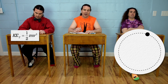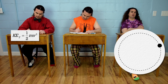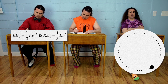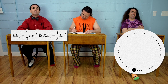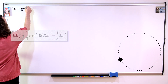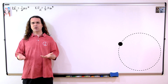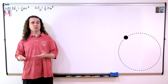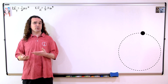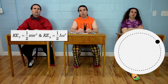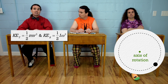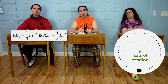Translational kinetic energy equals one-half mass times the velocity squared, and rotational kinetic energy equals one-half rotational inertia times angular velocity squared. So which one of these two equations do we use for the kinetic energy of a point particle moving in a circle? Well, the point particle is clearly revolving about an axis of rotation, so we should use the rotational kinetic energy equation.